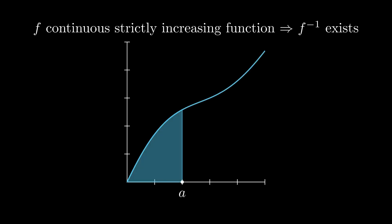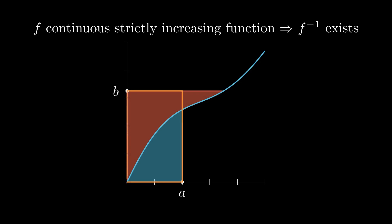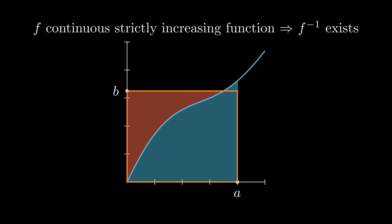Let's suppose we have a continuous strictly increasing function, then the inverse exists. Let's plot the integral of the function up to a point A. Then the integral of the inverse complements the other area. When we fit a rectangle into the graph, we see that the area of the rectangle is smaller than the other two areas combined. This remains true when we change A or B.